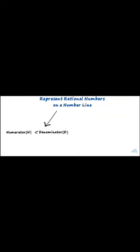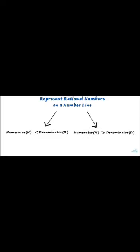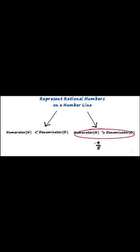Now we can move on to the representation of rational numbers on a number line. To simplify things, we can classify the examples into two types: ones in which the numerator is less than the denominator, and ones in which the numerator is greater than the denominator. Note that we consider only the numerical value to compare the numerator and the denominator. For example, if we are plotting minus 9 by 5, we compare 9 and 5, not minus 9 and 5. So minus 9 by 5 will come in the numerator greater than denominator category.